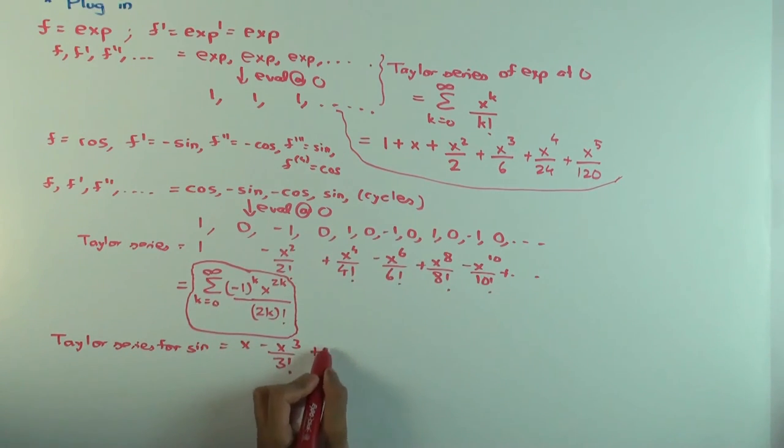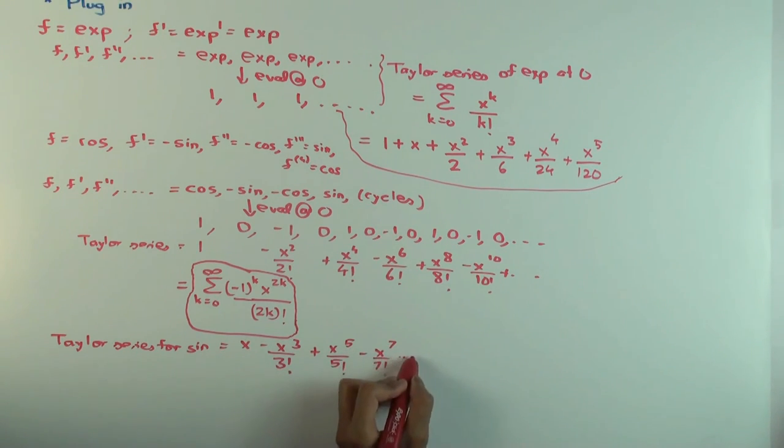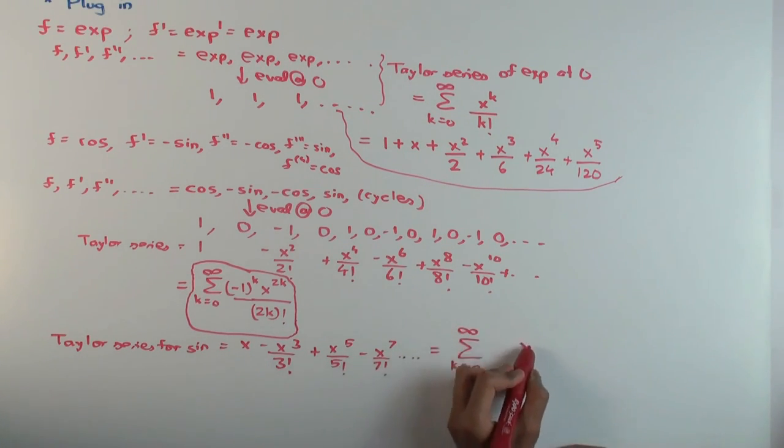So for sine it will be x minus x cubed over 3 factorial. So it's the same kind of periodic pattern but it just starts off a little differently.